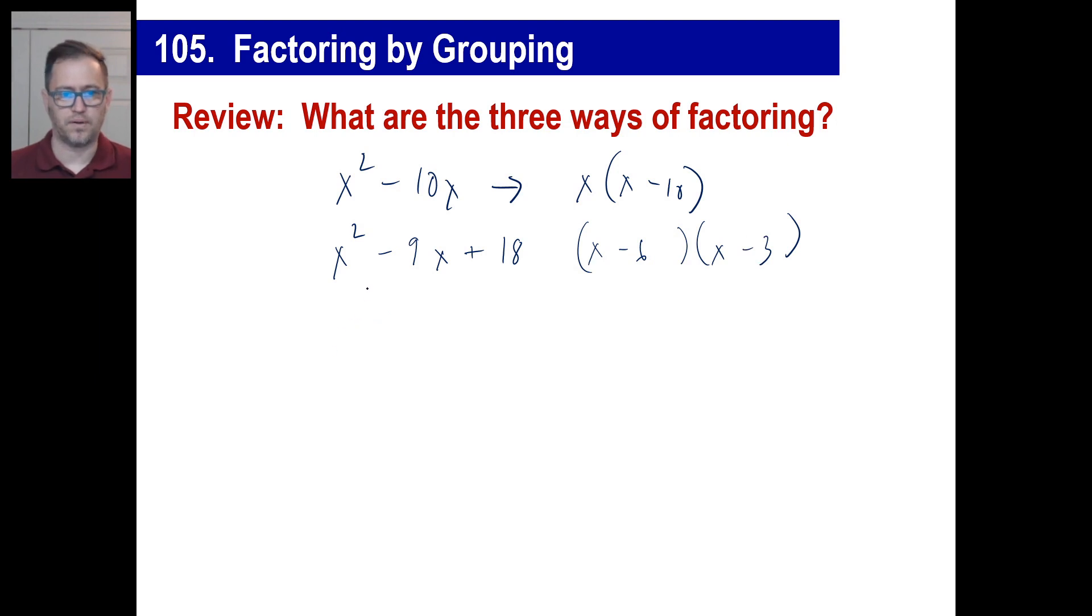The third, if you recall, it was something like this where we had 100a squared minus 81y to the sixth. And you went, ah, that's a difference, subtraction. And you went two squares, so I got it. So the square root of 100a squared, that's gonna be 10a, and I'll put that twice. One will be a plus, one will be a minus. And the square root of 81y to the sixth is 9y to the third.